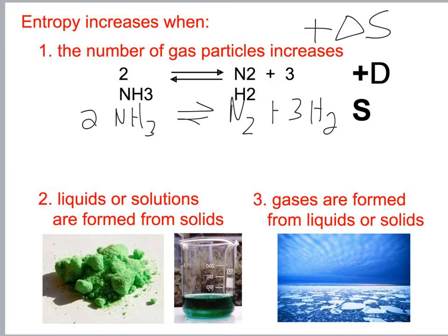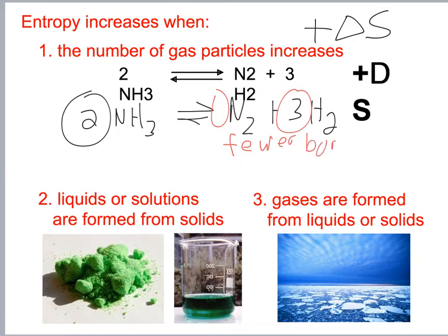Going from two to four moles: this side has fewer bonds, fewer restrictions on the motion of atoms, fewer degrees of freedom, more possible microstates. The number of gas particles increases, so it's a positive delta S.